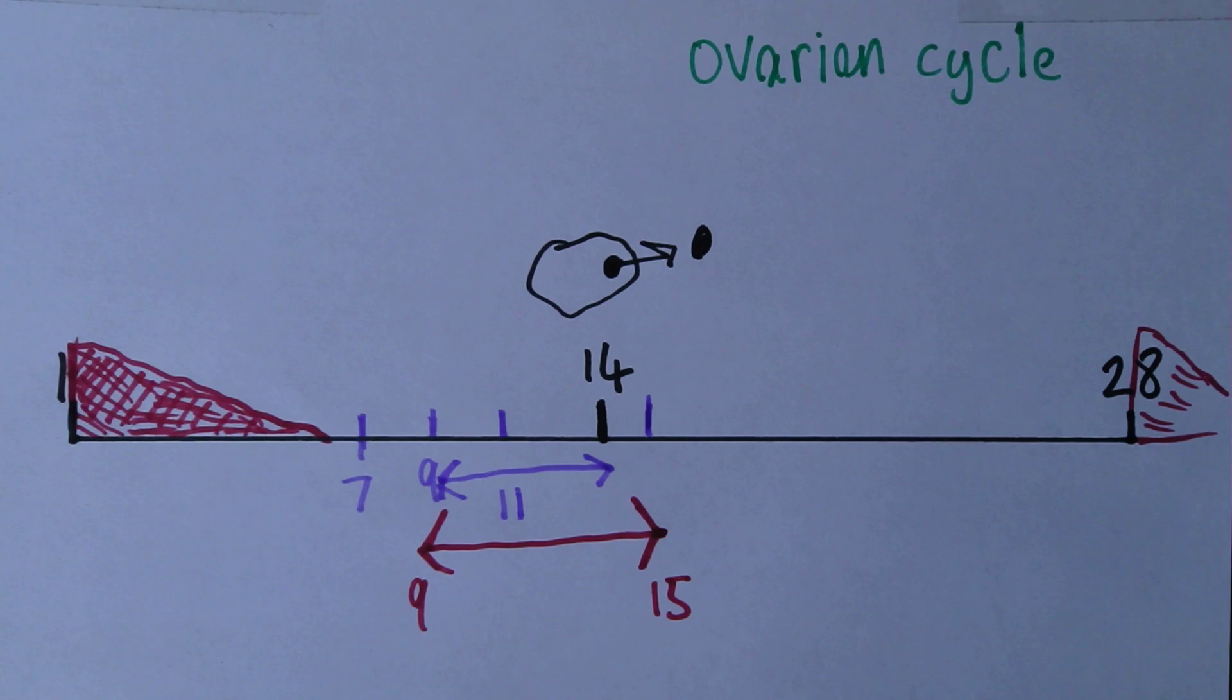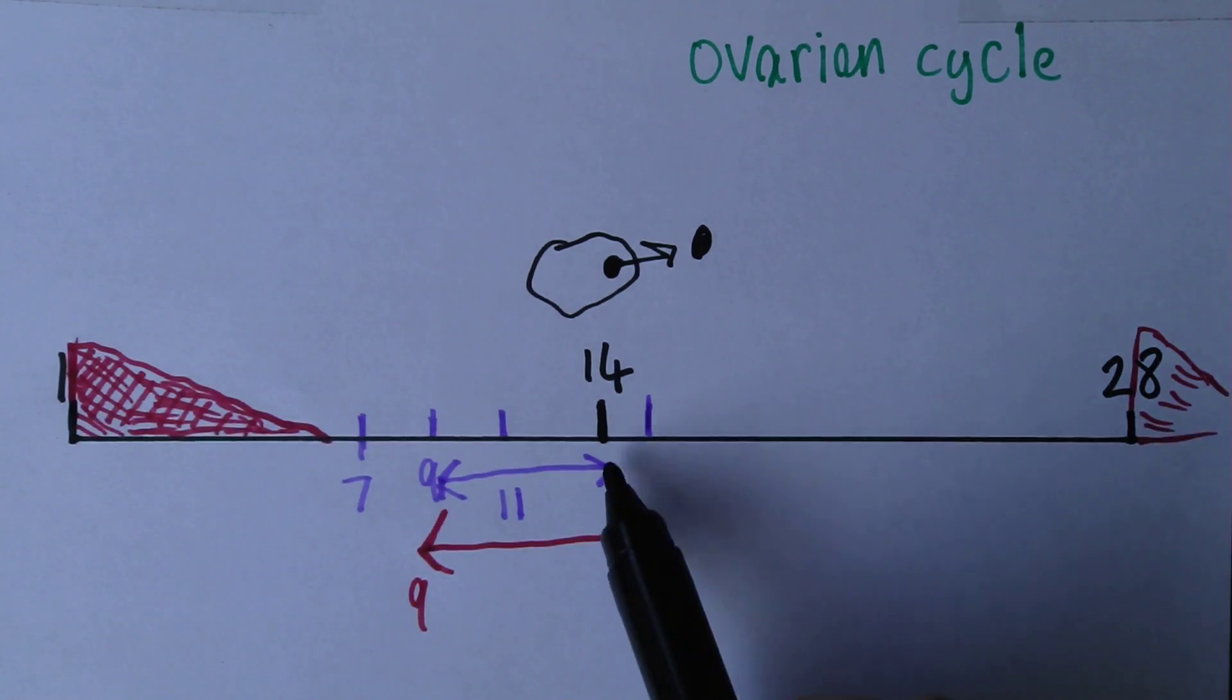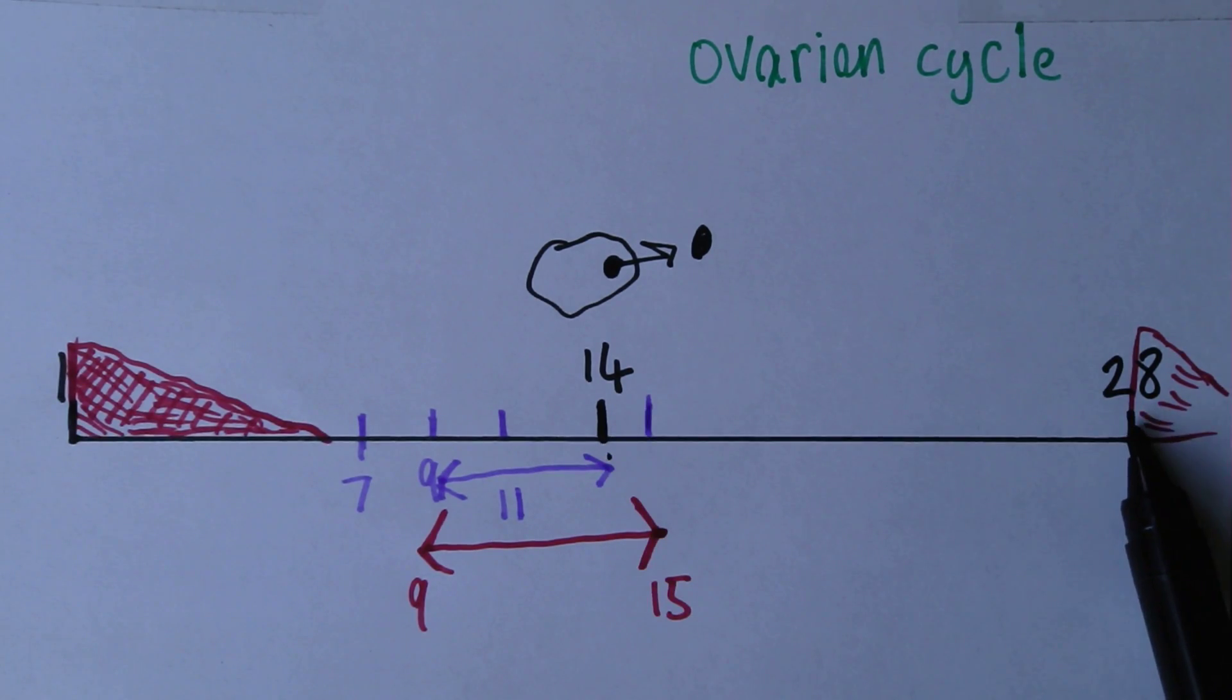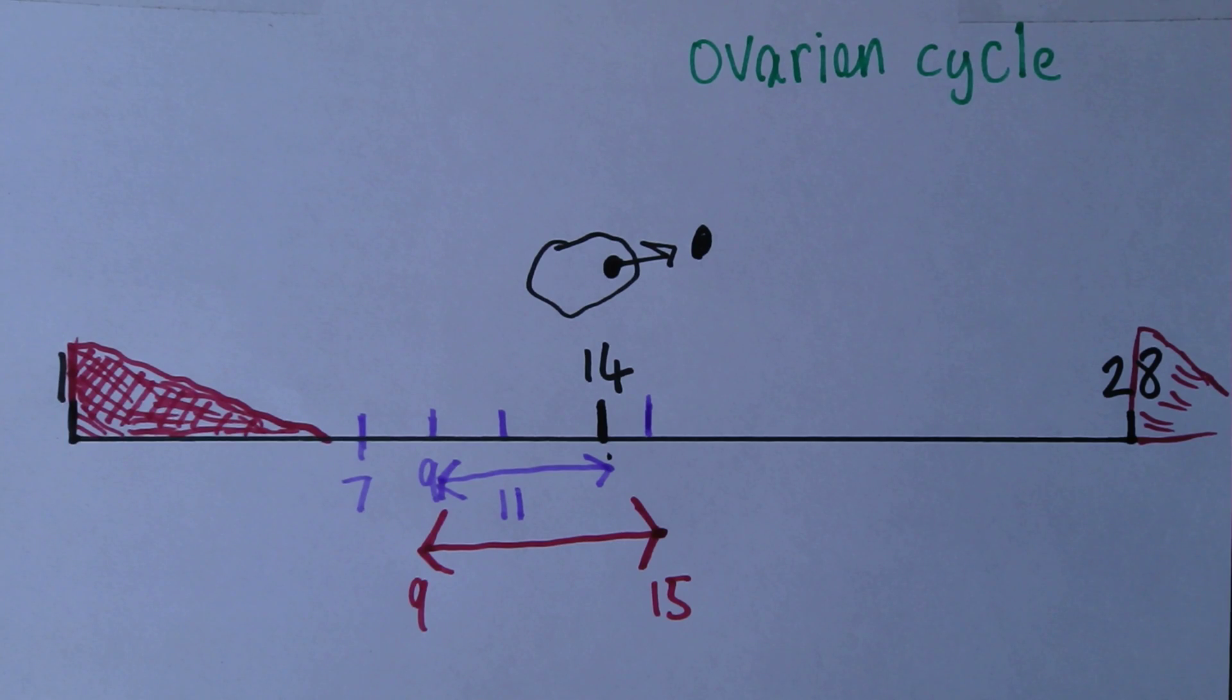If only it were this simple. Now of course menstrual cycles are not consistently 28 days with ovulation occurring exactly on day 14. Now it's true that the second half of the menstrual cycle, day 14 to day 28, does tend to be fairly consistent.